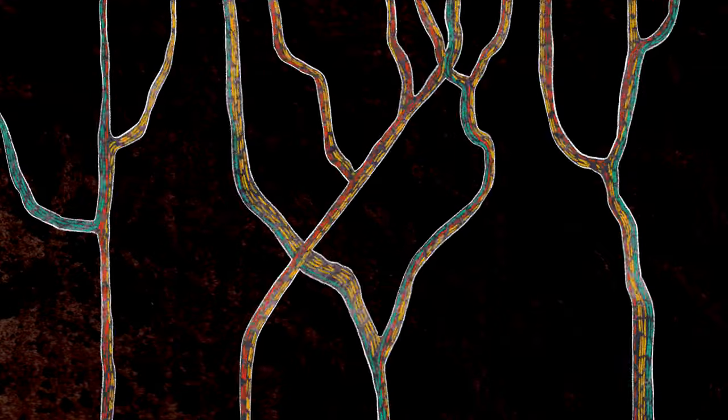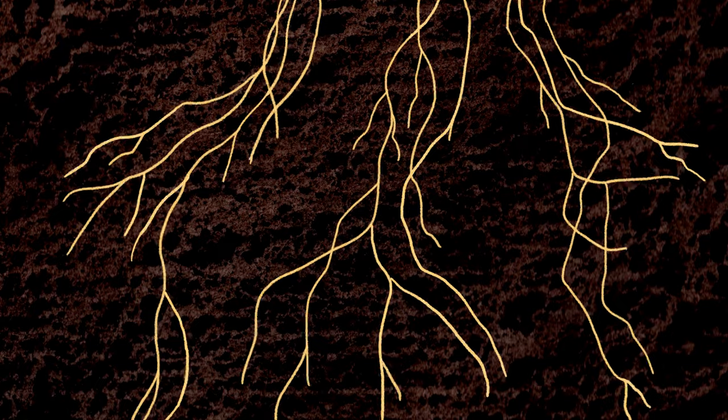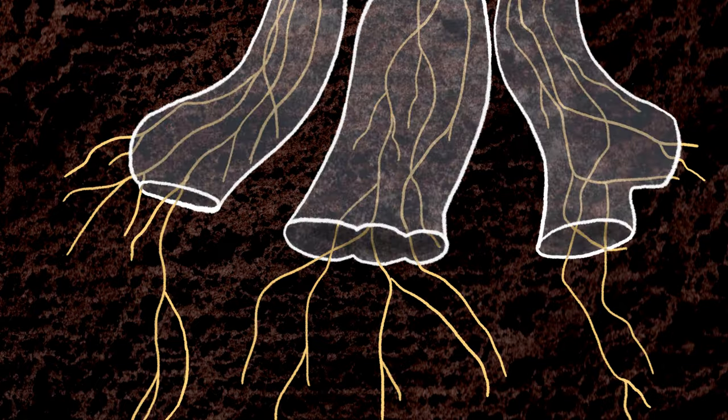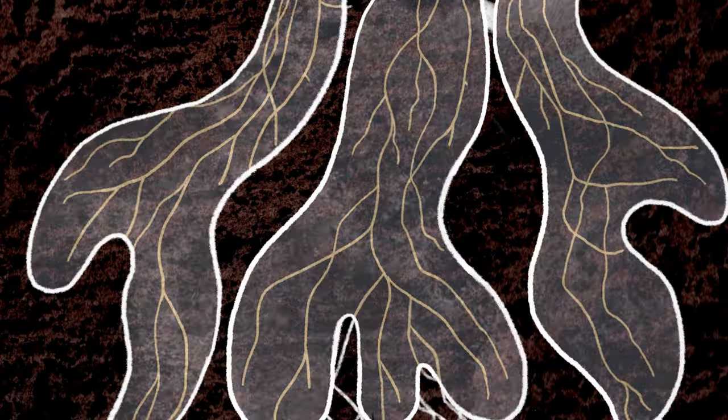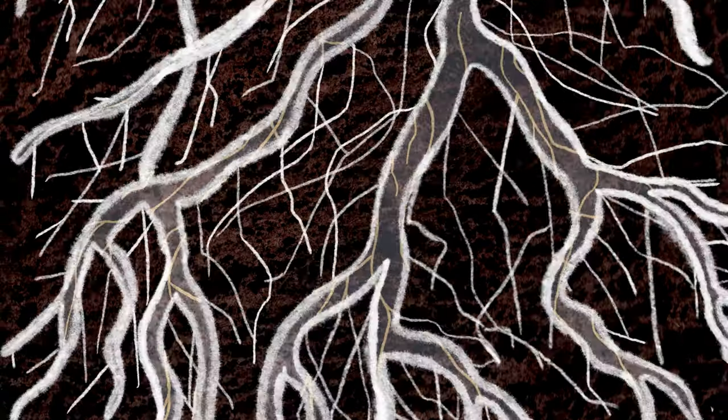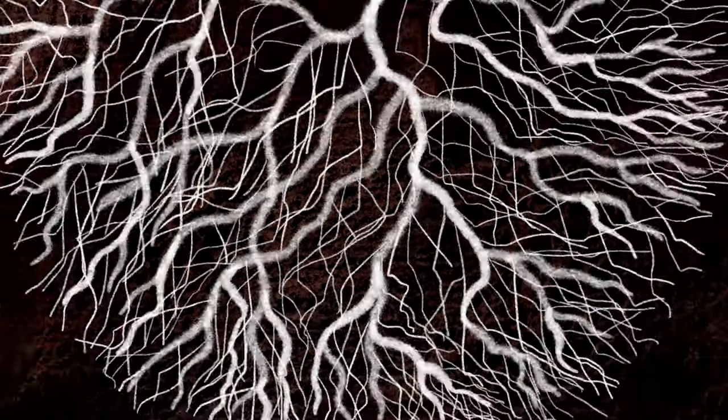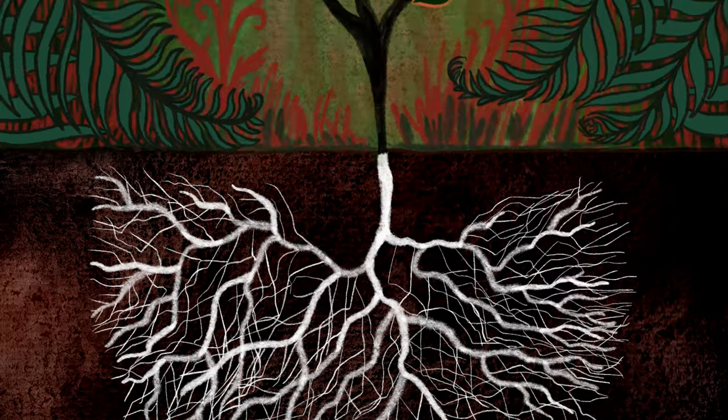As plants and fungi became more dependent on one another, plants evolved coarse, fleshy organs to house their fungal partners. By the time the first roots evolved, the relationship between plants and fungi was already tens of millions of years old.